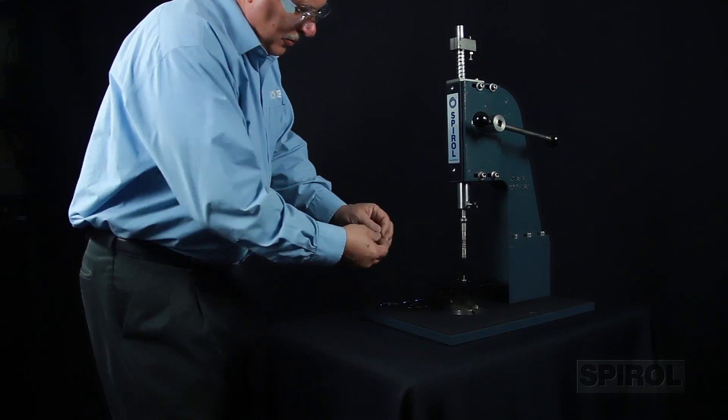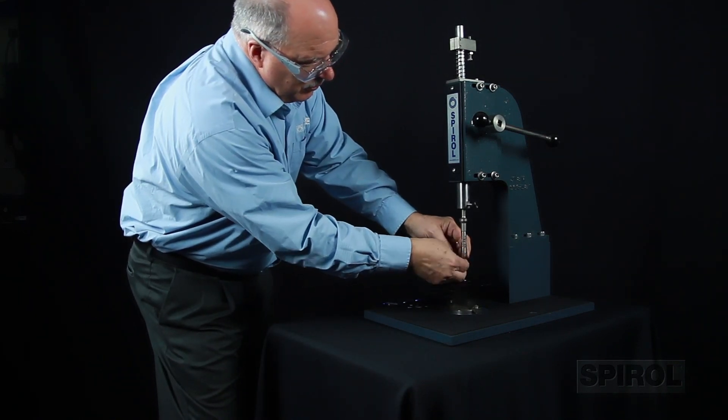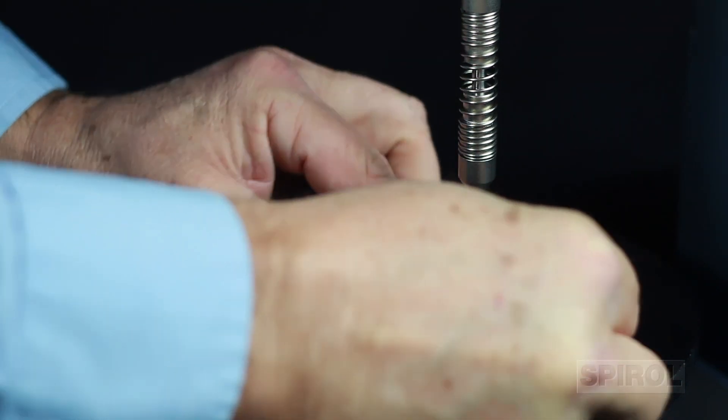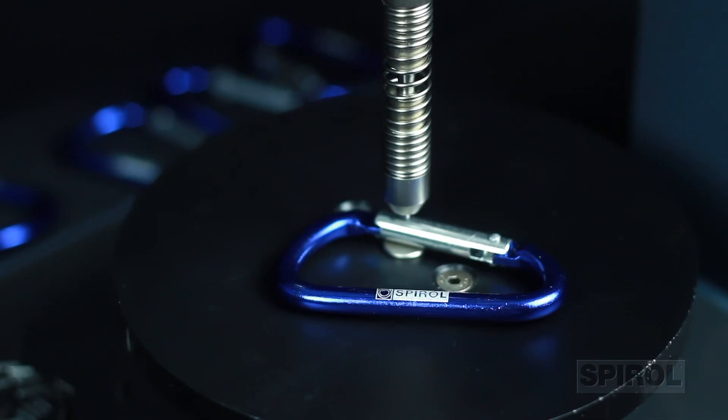To operate the machine, the operator loads the fastener into the tool, loads the part onto the spring-loaded disappearing alignment pin, and pulls the handle until the fastener is fully installed.